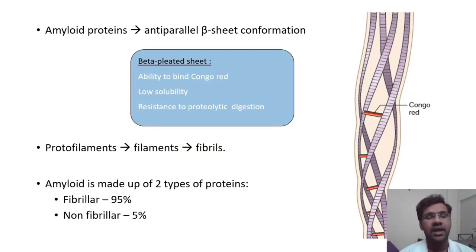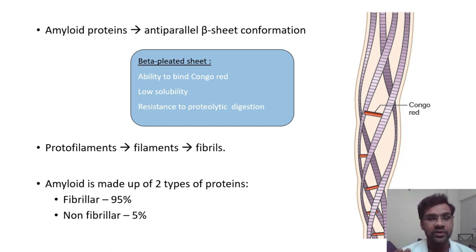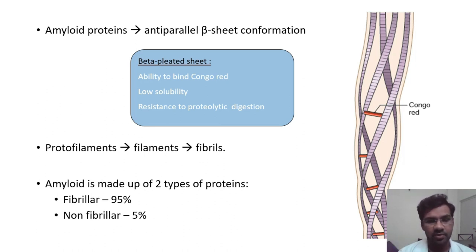Amyloid protein presents in anti-parallel beta-pleated sheets. From a disease perspective, these beta-pleated sheets are resistant to macrophage engulfing and also resistant to proteolytic damage caused by enzymes. From a diagnostic perspective, these beta-pleated sheets help retain the Congo red pigment, which makes it easy to diagnose. The initial building block is protofilaments; many protofilaments form filaments, and these filaments form fibrils. Each amyloid is made up of two types of proteins: a fibrillar protein and a non-fibrillar protein.